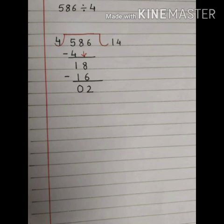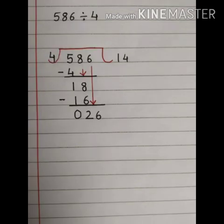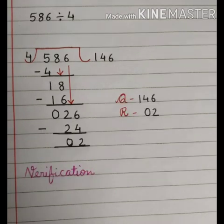Now here table of 4 is greater than 2 and we cannot subtract it further because here the dividend is smaller than the divisor. Bring down the next digit from the dividend that is 6. Now we have got the number 26. In table of 4, the nearest product is 4 6 are 24.